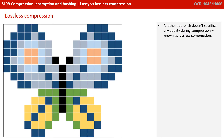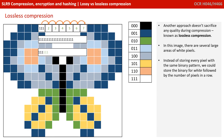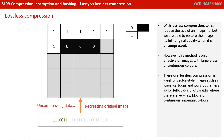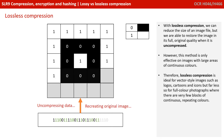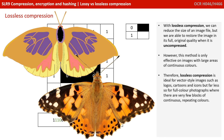Another approach doesn't sacrifice any quality during compression at all, and this is lossless compression. In this image, there are several large areas of white pixels. Instead of storing every pixel with the same binary pattern, we could store the binary for white followed by the number of white pixels that occur in a row. With lossless compression, we can reduce the size of an image, but we are able to restore the image in its full, original quality when we uncompress it. However, this method is only effective on images that have large areas of continuous colours.